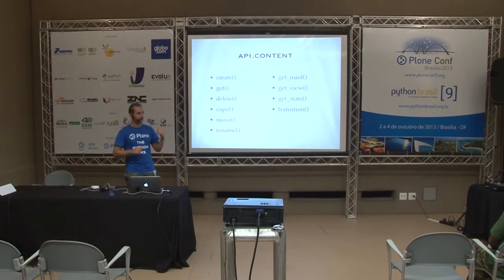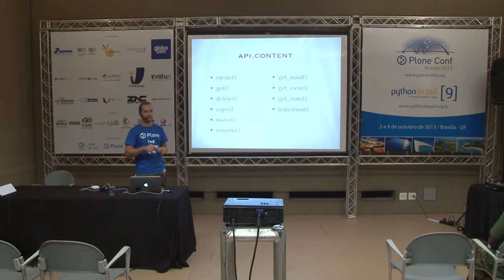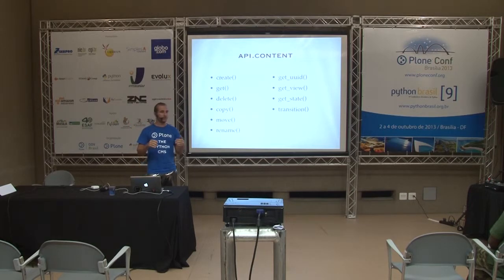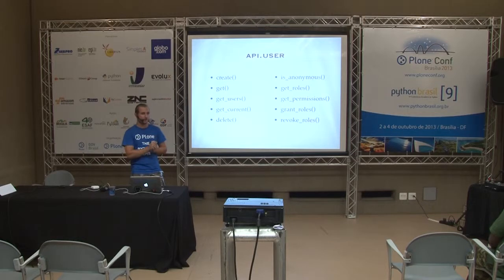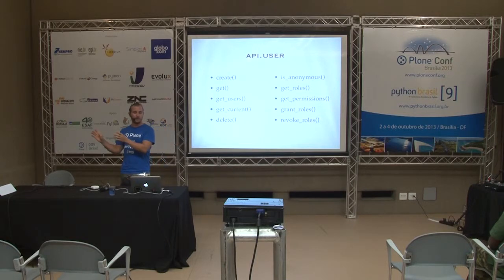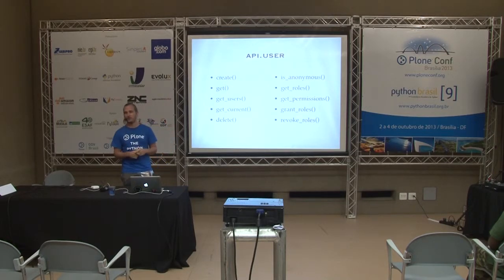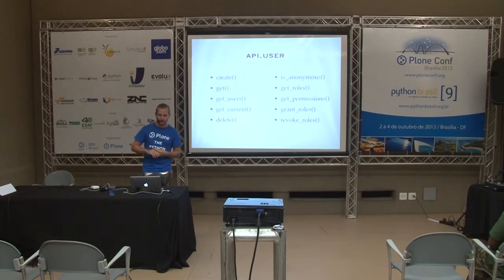For content, you have create, get, delete, copy, move, rename, stuff like that. And then get_uuid, which will probably get deprecated because you can now just call .UUID on any content item. get_view will get you a view - give it an object, a view name, and a request. And then get_state and transition, which we already saw, for workflows. The api.user is similar to content: you have create, get, delete. get_users gives you all users, or pass a group name to return just the users of that group. get_current gets the currently authenticated user. Then you have is_anonymous, and lots of wrangling with permissions and roles.